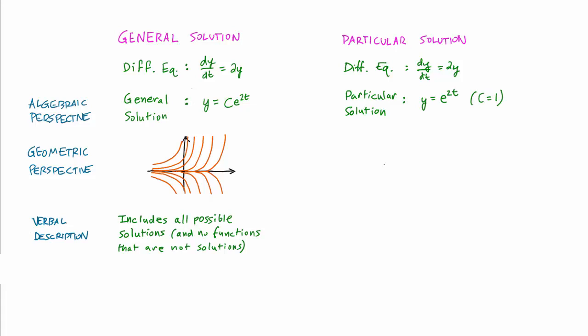If we were to choose a different value of c, say c equals negative 1 third, we would get a different particular solution. Now, the graph of a particular solution is just a single curve, which, if c equals 1, would look approximately like that. In other words, a particular solution is just one individual solution whose graph is a single curve, which, you might remember, is called an integral curve.